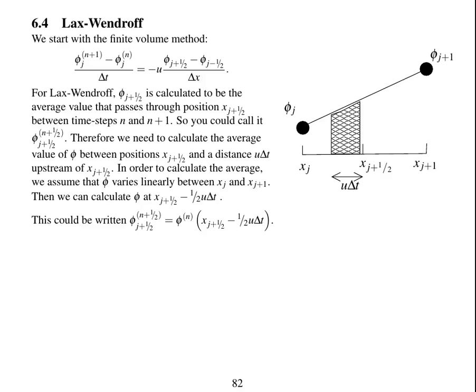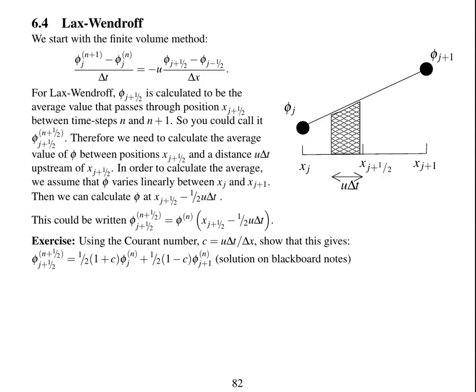And so for an exercise, I'd like you to try and work out, by linearly interpolating these two onto this position here, what phi at j plus 1/2, n plus 1/2 should be. You should use the Courant number, u delta t over delta x, and show that phi j+1/2, n+1/2 is given by this expression here, based on the Courant number.